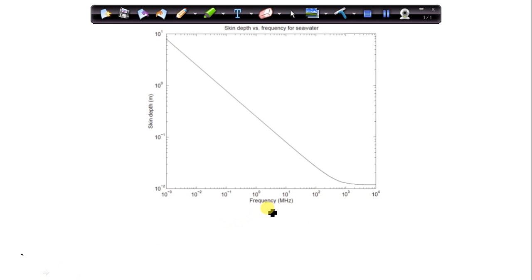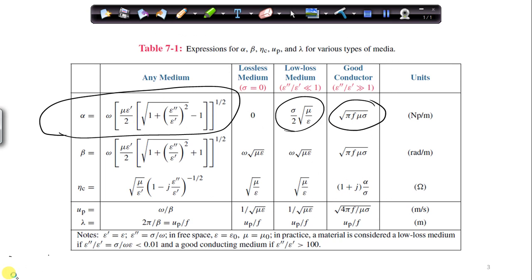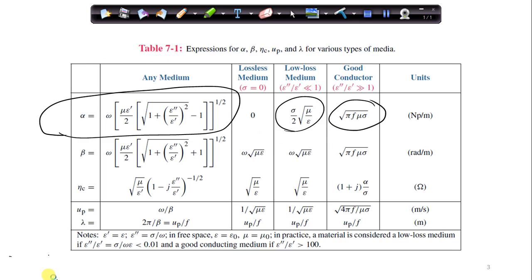So 10 to the 3 is 1 kilohertz. Since this scale is in 1 megahertz, this is 1 kilohertz here when we have 10 to the minus 3. And 10 to 1, this is 10 megahertz, that's our transition zone.